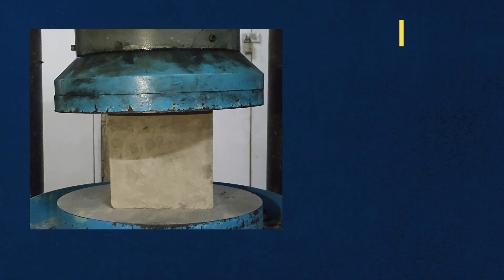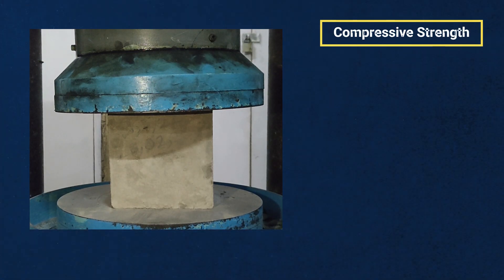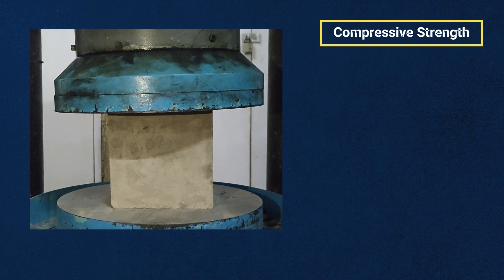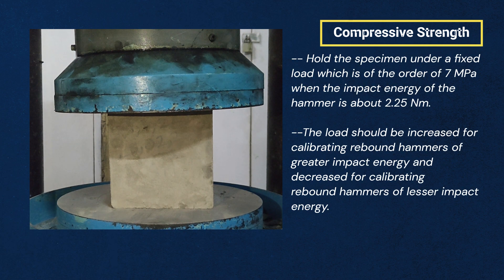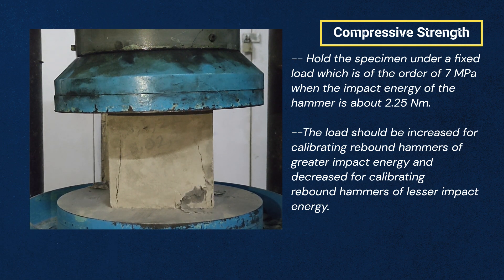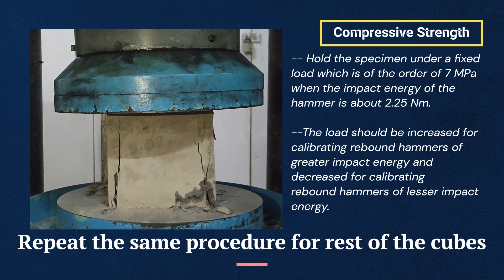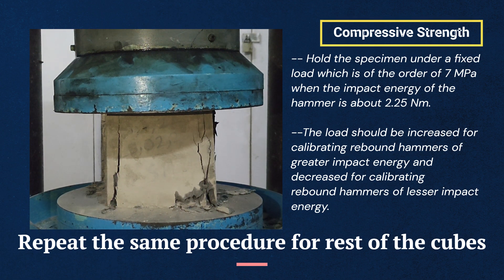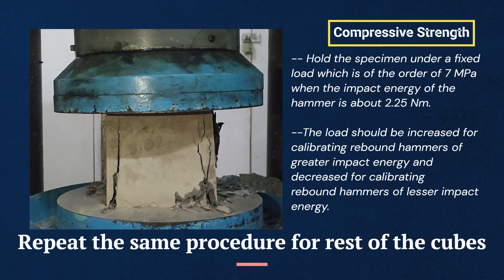Next, measure the compressive strength of the cube by loading it in a CTM and record the load applied when the cube fails. Divide the obtained load reading by the loading area to get compressive strength. Repeat the same procedure to record the rebound and compressive strength values of the remaining eight cube specimens.